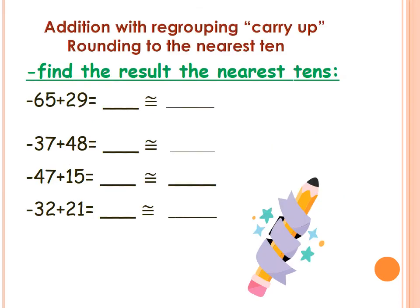Now, with the addition with regrouping — carry up. The first one is 65 plus 29. We start with the ones: 5 plus 9 equals? After 9: 10, 11, 12, 13, 14. We can't write 2 digits in the answer. We write the ones only, so we write 4. Then, what about the 1 in 14? We carry up the 1 to the tens. So 1 plus 6 equals 7, and 7 plus 2 equals 9. So, the answer is 94.